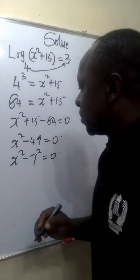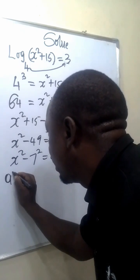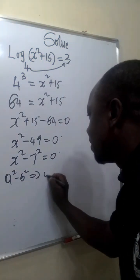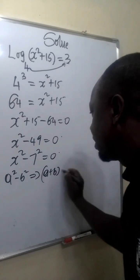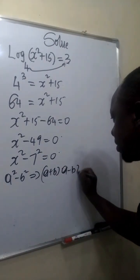From the concept of difference of two squares, if we have a squared minus b squared, this is the same as a plus b times a minus b.